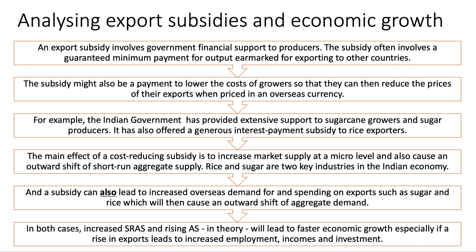Now the main effect of a cost-reducing subsidy is to increase market supply at a micro level — I'm sure you can think of a diagram you can draw, we'll go through that in a second. And also cause an outward shift of short-run aggregate supply, particularly if rice and sugar and other industries are key sectors in a particular economy as they are in India. And a subsidy can also lead to increased overseas demand for and spending on exports such as sugar and rice, which will then cause an outward shift of aggregate demand.